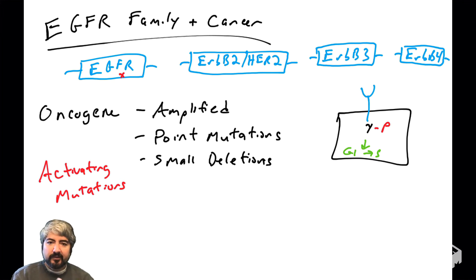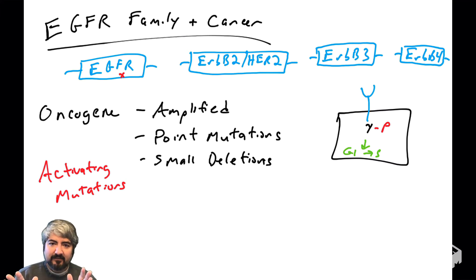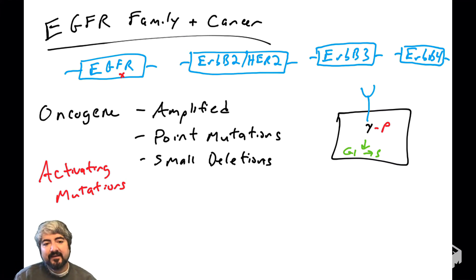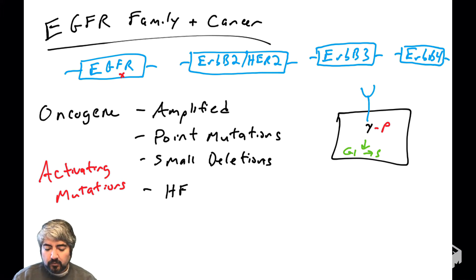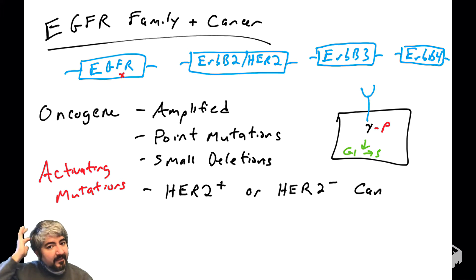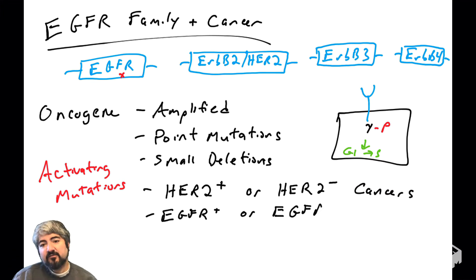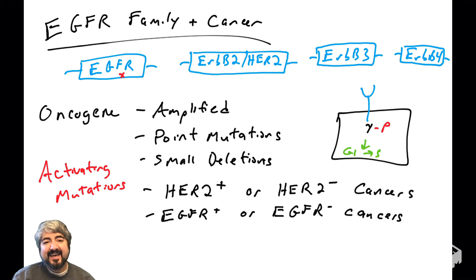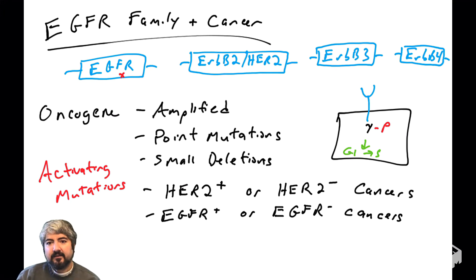In other videos we'll see examples of mutations that destroy an enzyme's activity, but these are mutations that activate EGFR family members. When that's the case, these cells are going to get phosphorylated on their tyrosines in the cytoplasmic tail of the family members, sending a signal into the cell, and the cell will go through the cell cycle.